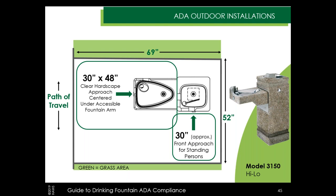Common practice in public parks is to pour a pad of concrete specifically for the fountain to keep it off the pedestrian walkway and give users a firm surface — whether standing or in a wheelchair. To fit both the wheelchair floor space and high side fountain space, you need a pad that is 69 inches by 52 inches, with the low side facing the path of travel for an easy forward approach.